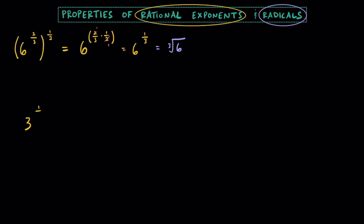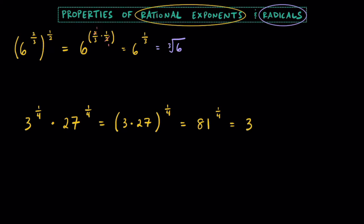For this next example, let's take a look at 3 to the 1 fourth power, and multiply that by 27 to the 1 fourth power. They're both raised to the same power, so what we can do here is find the product of their bases: 3 times 27, and then raise that product to the 1 fourth power. Now 3 times 27 is going to be 81, so we really have 81 to the 1 fourth power. We need to think to ourselves, what number multiplied by itself 4 times equals 81? 3 times 3 is 9, then 9 times 9 is 81. So that means 4 threes are going to make 81, so that's going to be the value here.